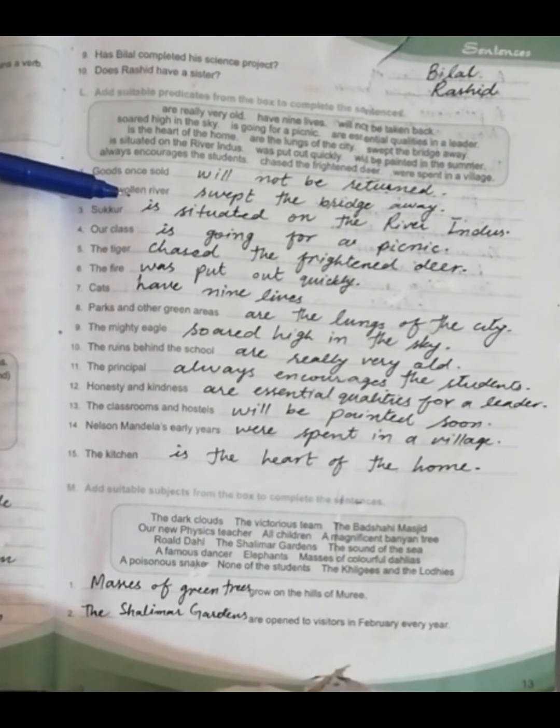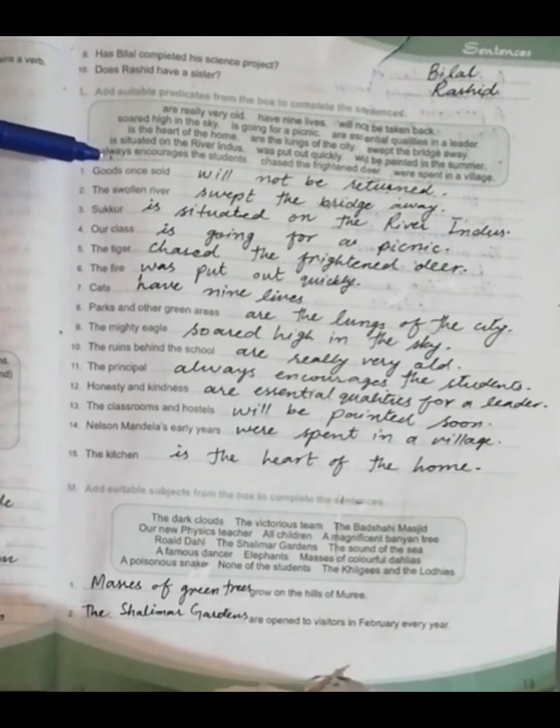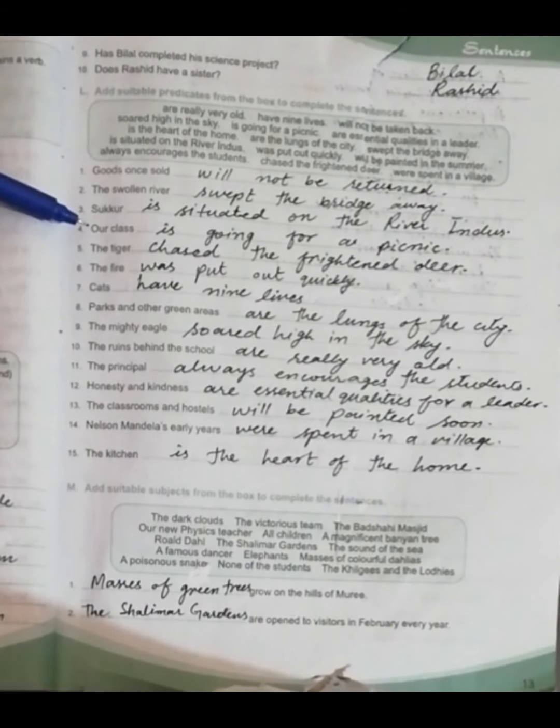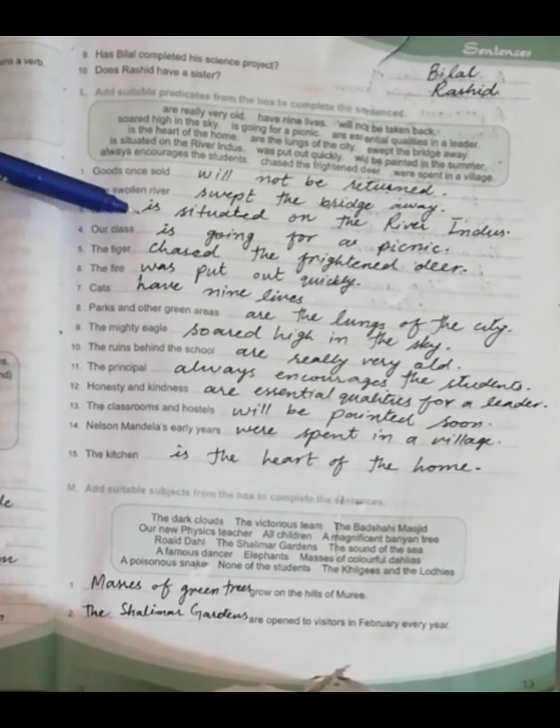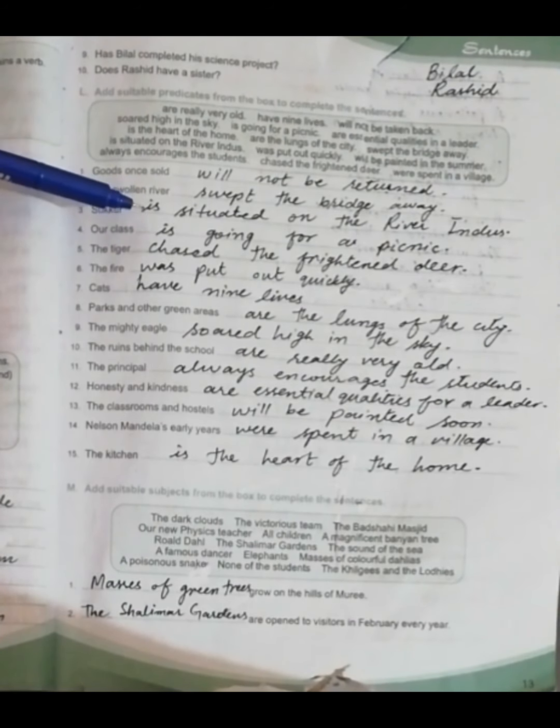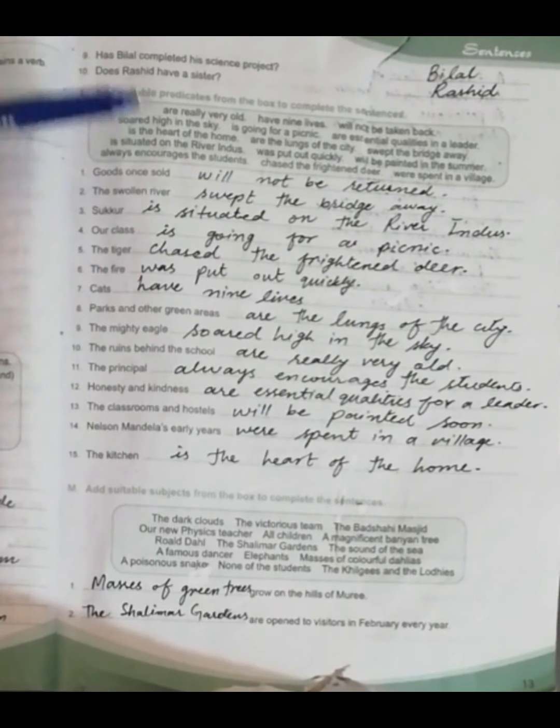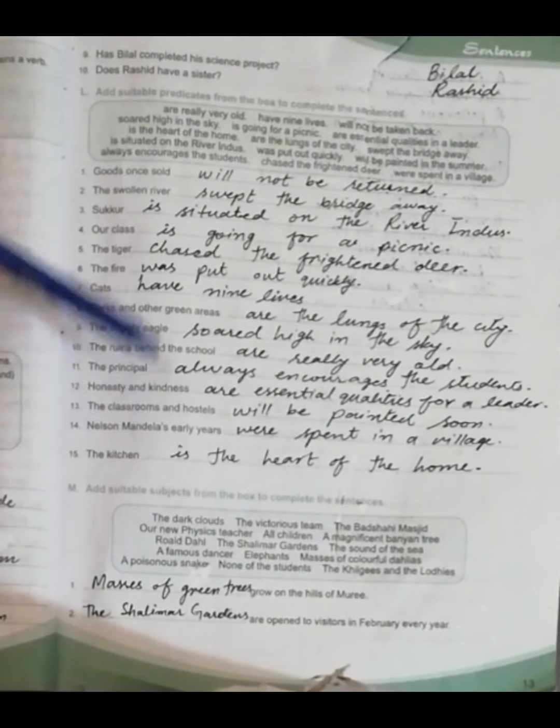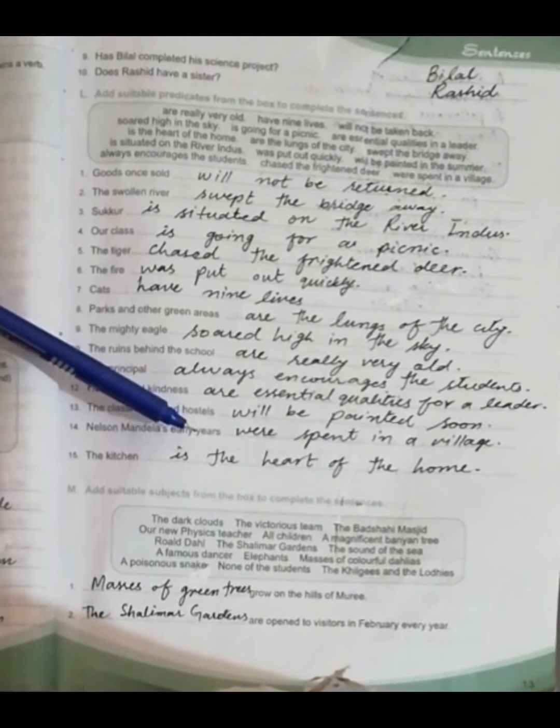Sukkur is situated on the river Indus. So the next one is 'Our class' and the predicate is 'is going for a picnic.' So these are your predicates here and I have mentioned some of the predicates also here.